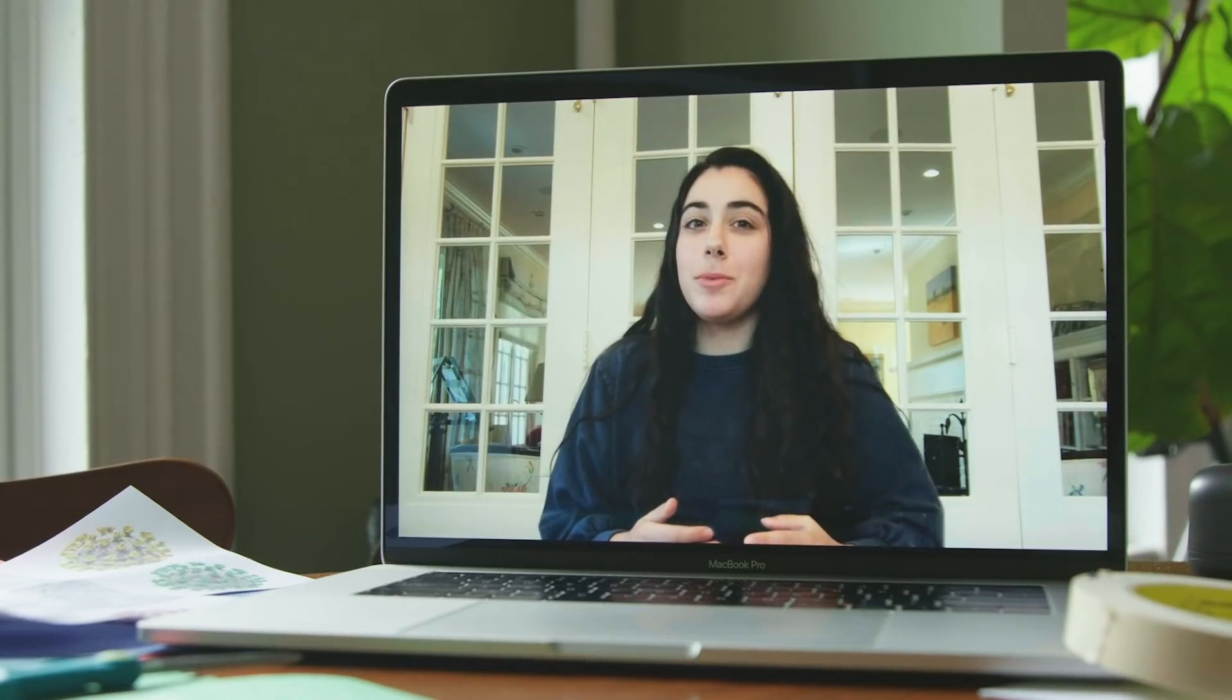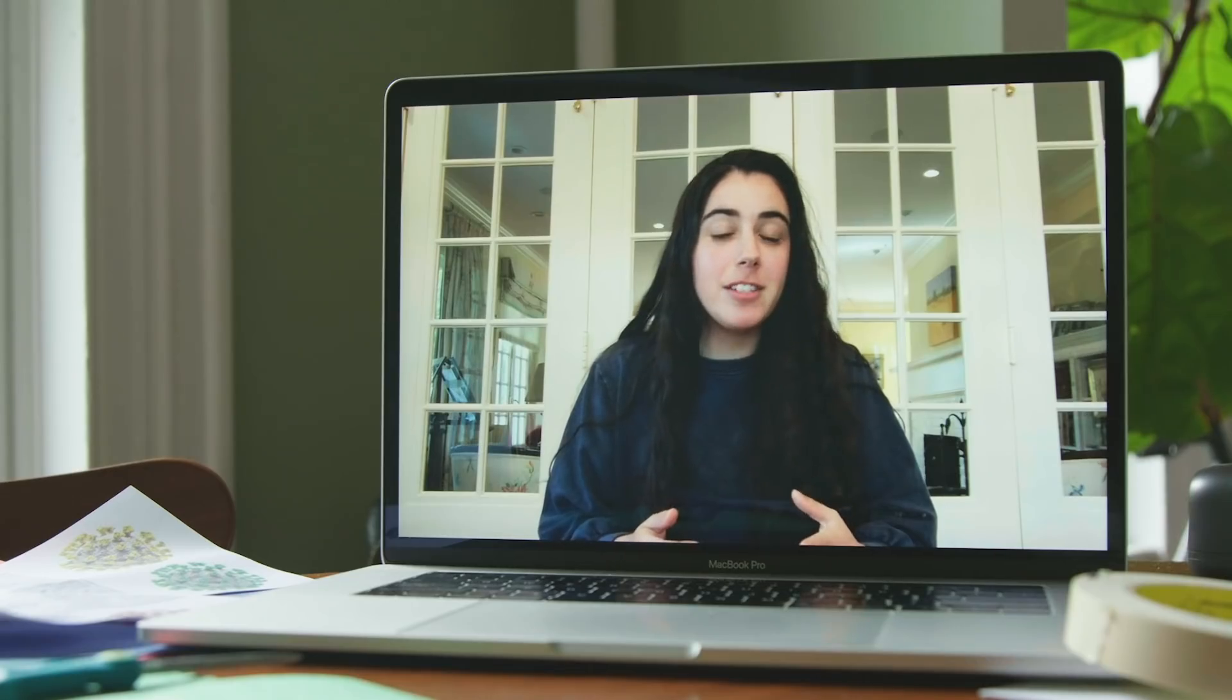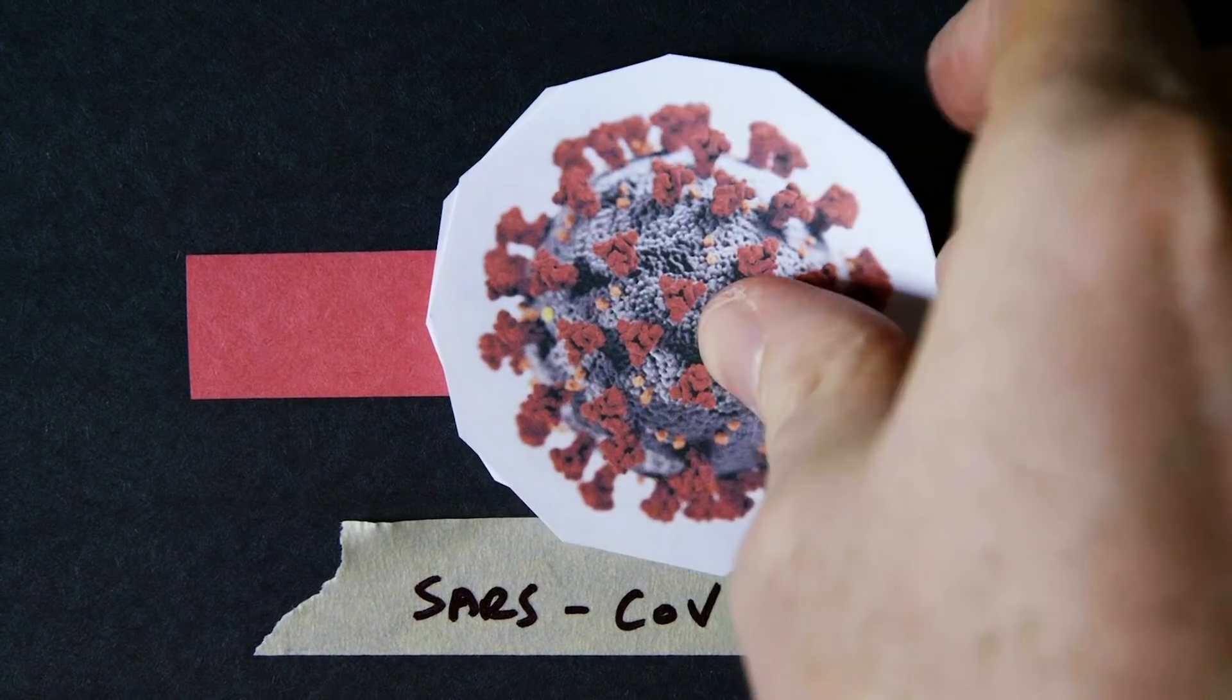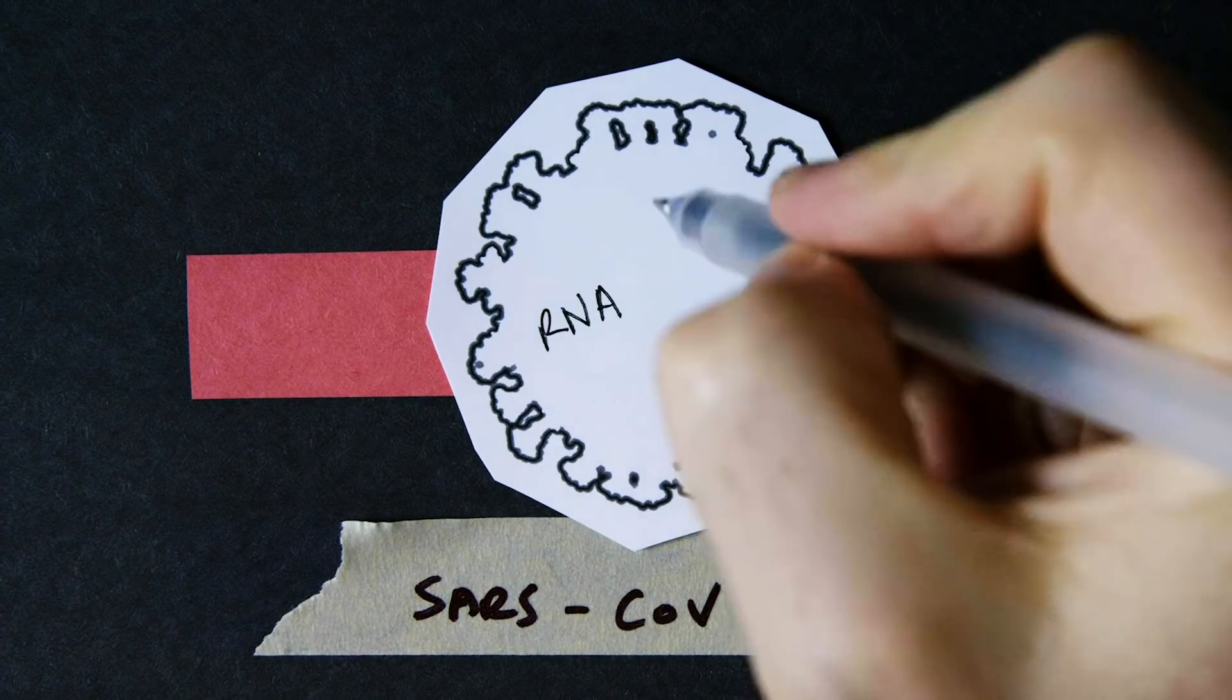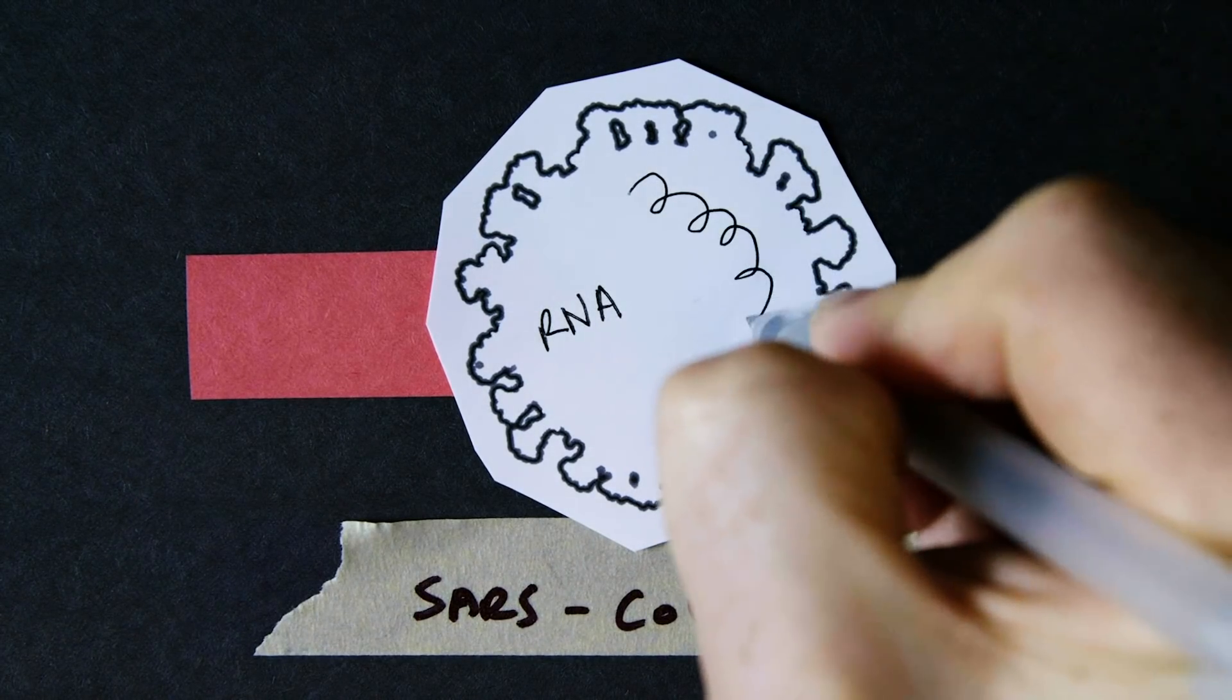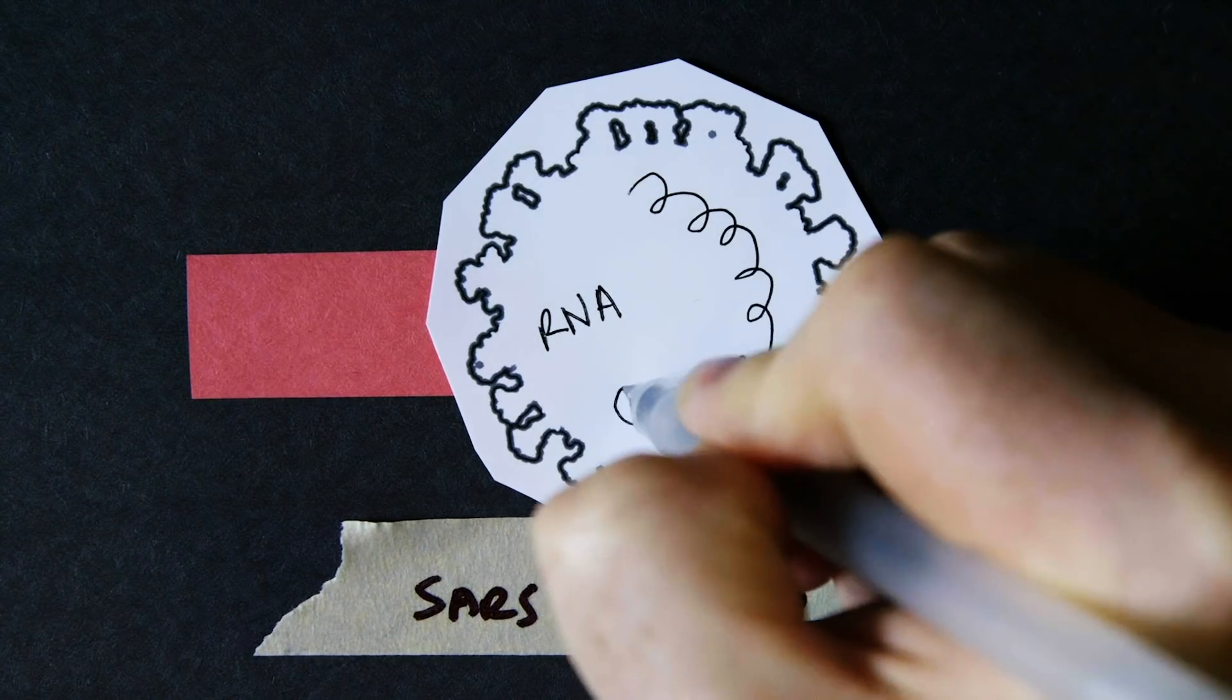It also has to do with this particular type of virus. The coronavirus is an RNA virus, and those usually mutate fast. Unlike DNA, RNA doesn't have built-in tools to repair the mistakes made in the copying process.